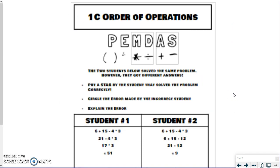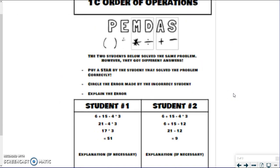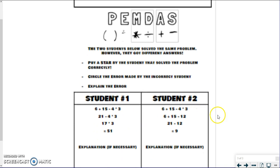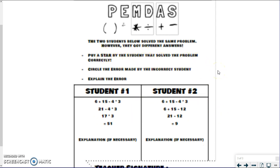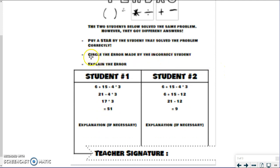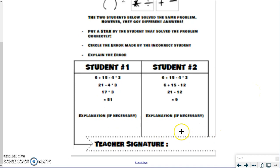which is an error analysis. So you have two students that both solved the same problem. However, one student solved it correctly. One student did not. So you need to figure out who solved it correctly. Put a star next to the student who solved the problem correctly. Whoever solved it incorrectly, you need to circle the error they made. So what section did they get wrong? And then explain it. So you're not explaining for both. You're just explaining for whichever one is incorrect.